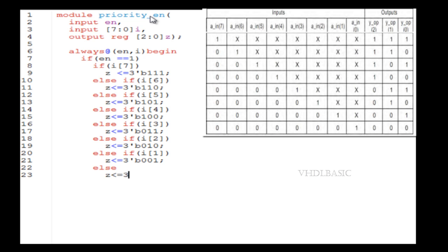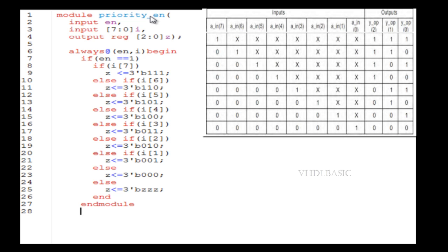If the priority encoder is enabled, we start checking the input bitwise. If bit number seven is one, the output will be assigned as one one one. If bit seven is zero but bit six is one, the output is one one zero. If both are zero but bit five is one, output is one zero one, and so on down through each bit. The least priority bit zero will be checked at the end of the if statement. This is how the priority encoder works in the Verilog code.